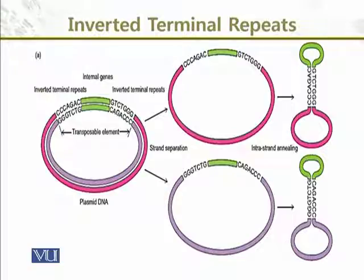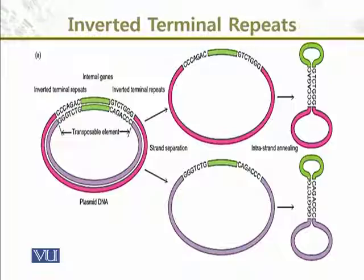He took a transposable element — a plasmid inside a circle — and another one, a red one outside, with inverted yellow plasmids. They both replicate and divide, and when they replicate and divide, there is an intra-strand annealing, and we get a loop over there.